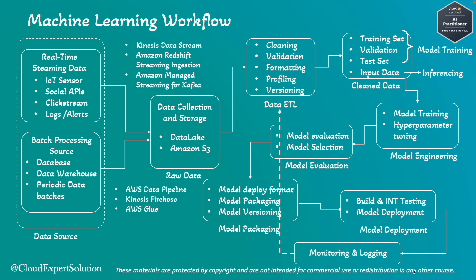On a high level, the machine learning workflow covers: data source identification, raw data collection, data ETL, and creating clean data — these are called data pipelines. Model engineering, model evaluation, model packaging, and model deployment are called the ML pipeline. Once you combine monitoring and logging with the machine learning pipeline, it becomes MLOps, or machine learning ops.